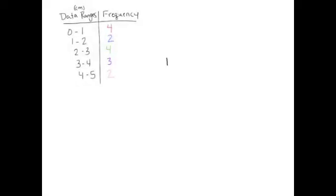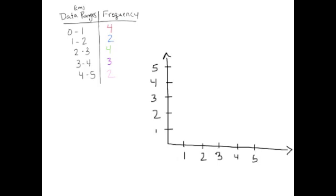For the histogram, we are just going to take the data from our frequency distribution table and graph it. Histograms are like bar graphs, except in a bar graph, the data is categorical, so the bars do not touch. In a histogram, the data is continuous, so the bars will touch.